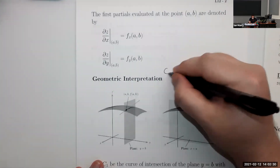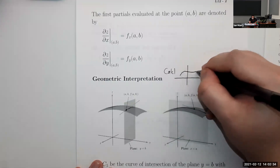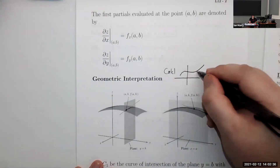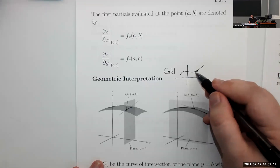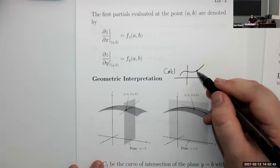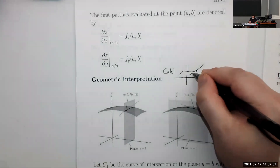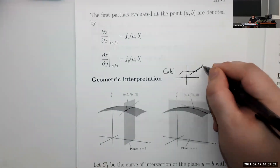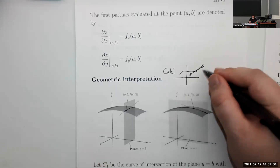Going back to Calc 1 for a moment — remember the geometric interpretation of the derivative? The derivative is the slope of the tangent line. So if we have a tangent line to our function, the slope of this line is going to be our derivative. That's how it worked in Calc 1 with a single variable.